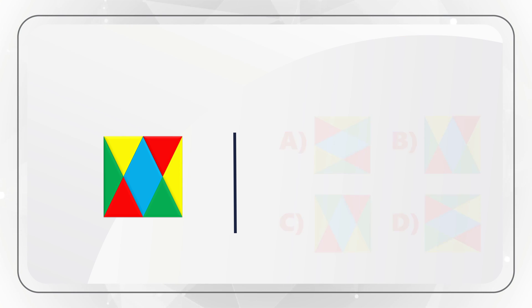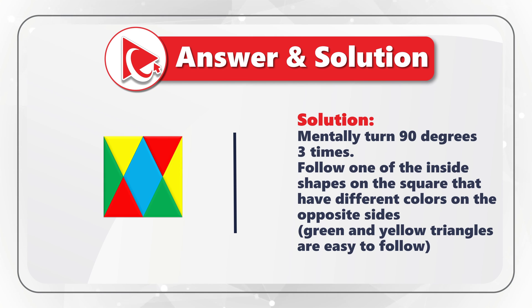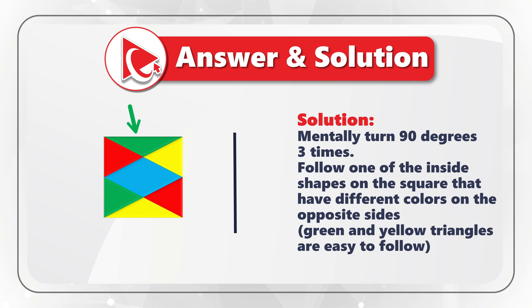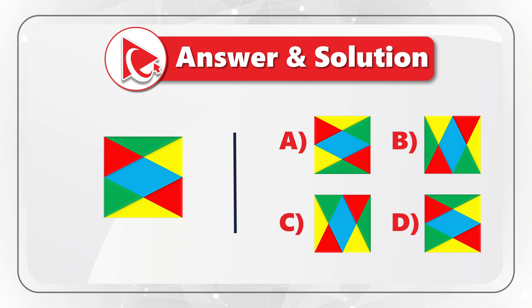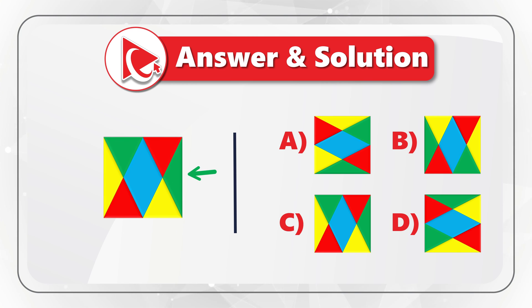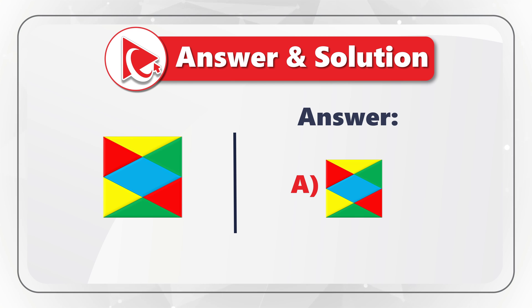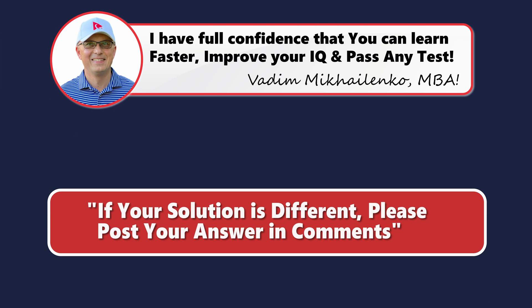So let's do the turning. Let's take the original square and follow the green triangle on the left. After the first 90-degree turn, the green triangle ends up on the top. After another turn, it's on the right side. And after the last 90-degree turn, our green triangle ends up at the bottom. So the correct choice here is choice A, where the green triangle ended up on the bottom. Do you have a better way to solve it? Please post your thoughts and rationale in comments.